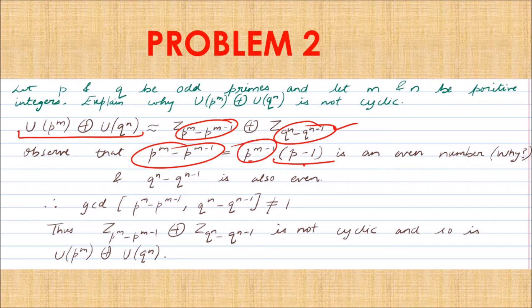Similarly, q^n − q^{n−1} is also even. The decisive step: check whether the gcd of the two suffixes equals 1. If gcd = 1, the direct product of cyclic groups is cyclic; if not, it is non-cyclic. Since both suffix numbers are even, their gcd is at least 2, not equal to 1. Therefore the right-hand side group is not cyclic, and hence U(p^m) × U(q^n) is not cyclic. This problem again uses the isomorphism rules and remarks discussed earlier.